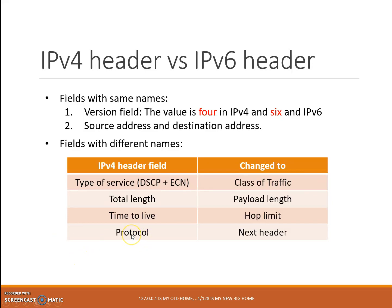Number 4: protocol has changed to next header in IPv6. In IPv4, the protocol field indicates the protocol being carried in the IPv4 data or payload. This same function exists in the next header field in IPv6, but in IPv6 it can also indicate the existence of an extension header following the main IPv6 header.